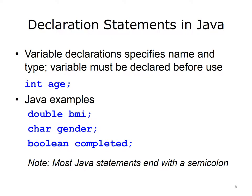Declaration statements define variables. Variables are given a name, and their data type is specified, as is required for strongly typed languages. The variable's type determines what values can be assigned to it. For example, a floating point variable cannot hold a character. Typically, we will put variable declarations at the start of a module. Here are some examples of declaration statements in Java: a variable named age that is an integer, a variable named BMI that is of type double, a variable named gender that is of type char, and a variable named completed that is of type boolean. Note that all of these declaration statements have a semicolon at the end. Most Java statements end with a semicolon. Not every programming language requires one to explicitly declare variables; some allow implicit declaration the first time the variable is referenced.